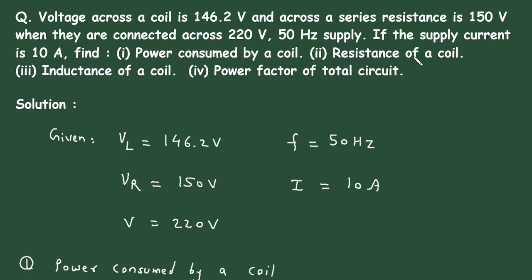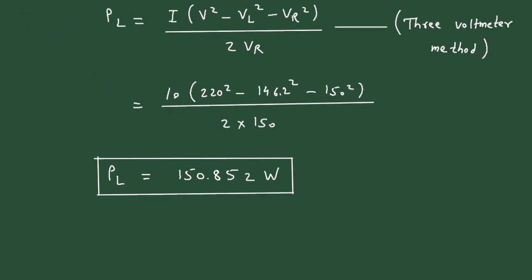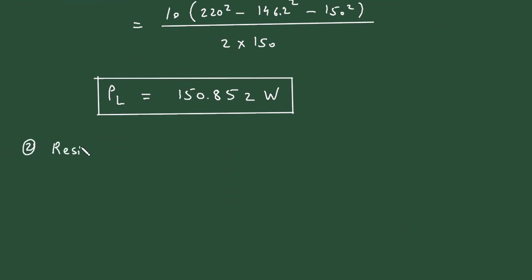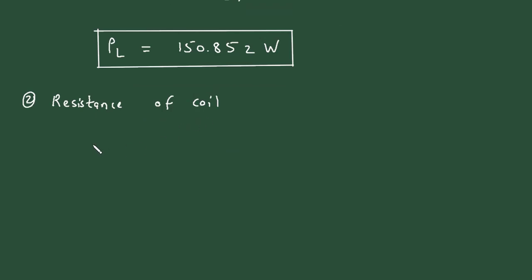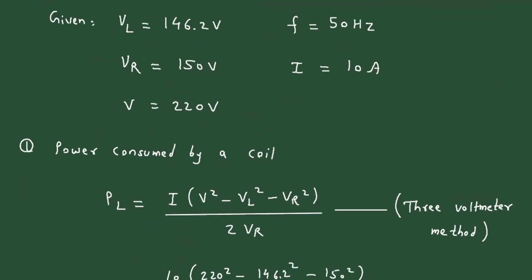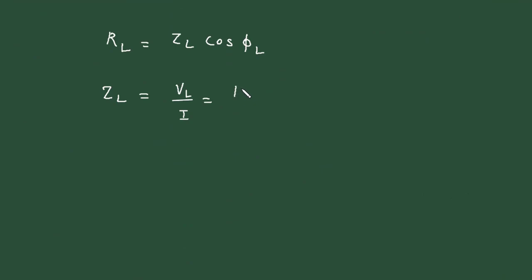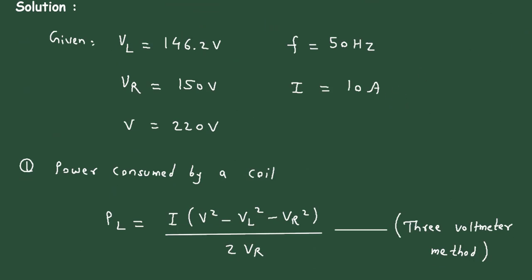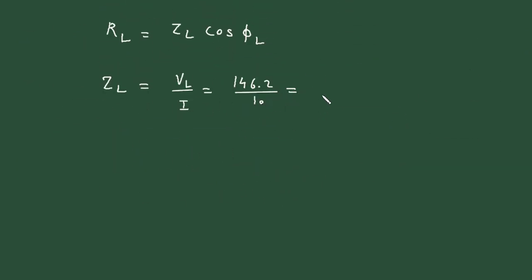Next, we have to find the resistance of the coil. The formula is RL equal to ZL multiplied by cos phi L. First we calculate ZL: ZL is equal to VL upon I, that is 146.2 divided by 10, so ZL is equal to 14.62 Ohm.